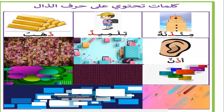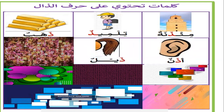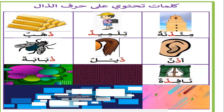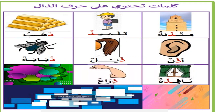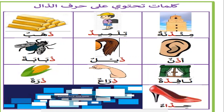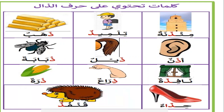What is this? Udhunun. Try to read: Zaylan. Zubabatun. Nafizatun. Zira'un. Zuratun. Hizaun. Kunfuzatun.